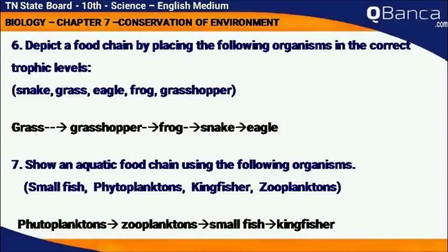Show an aquatic food chain using the following organisms: Small Fish, Phytoplankton, Kingfisher, Zooplankton. Answer: Phytoplankton → Zooplankton → Small Fish → Kingfisher.